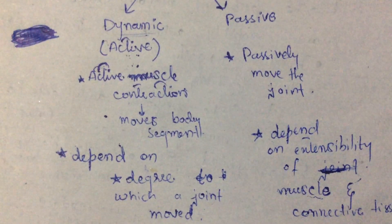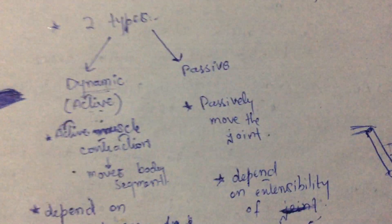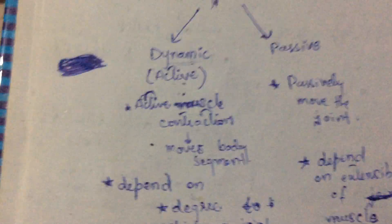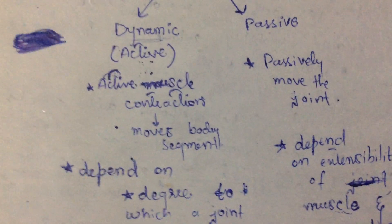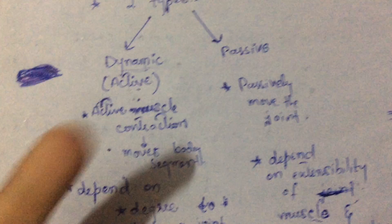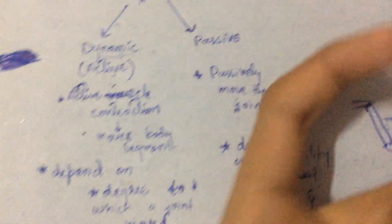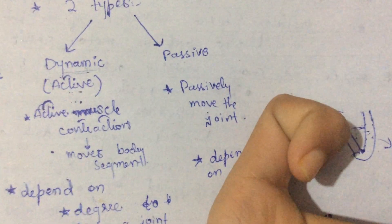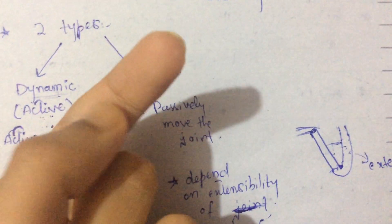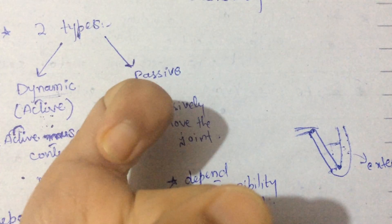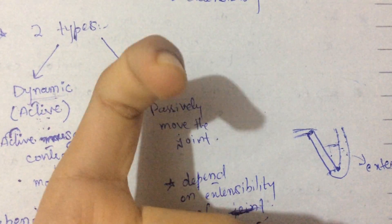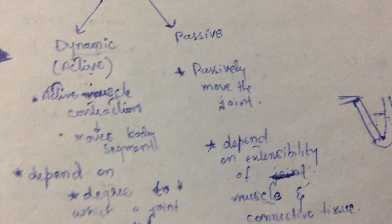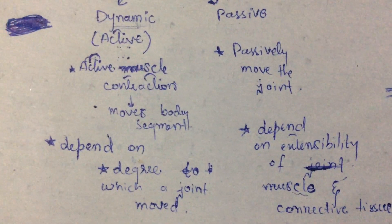Dynamic flexibility depends on the degree to which a joint moves due to muscle contraction, and the amount of tissue resistance encountered during active movement. The degree of joint movement depends on how strong the muscle contraction is. Because movement is actively performed, there is minimum resistance, and due to this minimum resistance the movement is carried out. Dynamic flexibility is essentially active mobility.